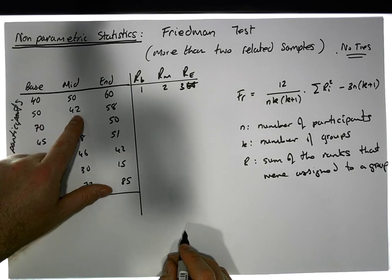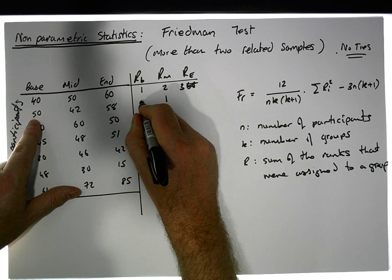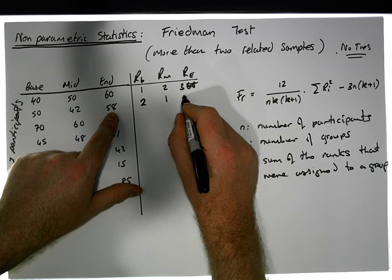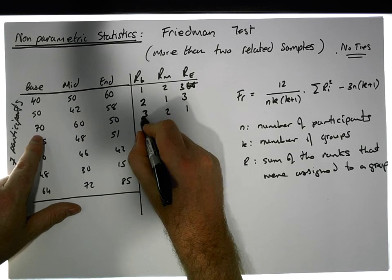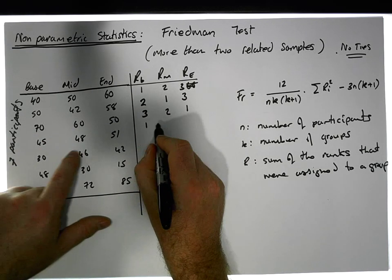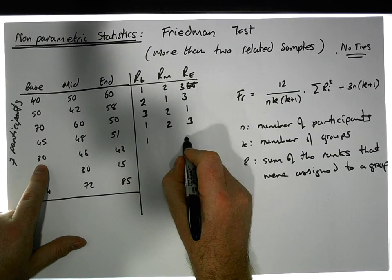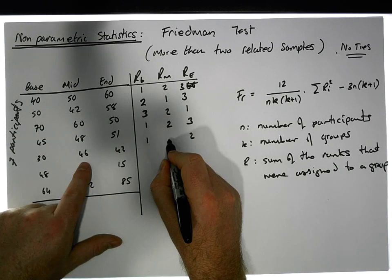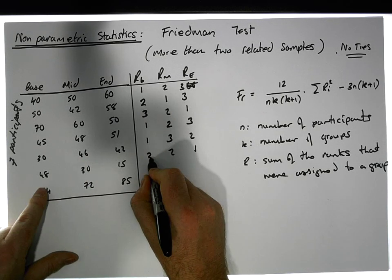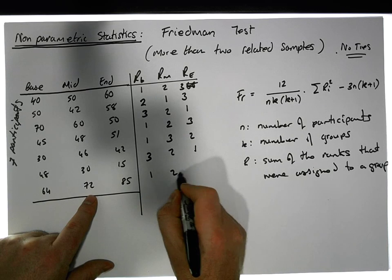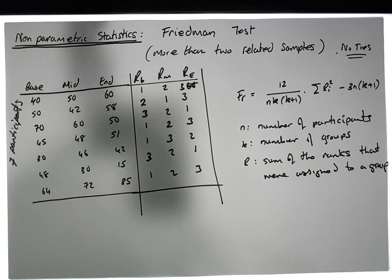The smallest in the next participant is 42, so that's a one, followed by the 50 which is a two, followed by the 58 which is a three. The smallest here is one, two, three. The smallest here is one, next one is two, three. Then we have this is smallest, this is the next smallest, and this is the largest - three. Then we have one, two, three, and finally we have one, two, and three, which gives us our ranks for each of our groups.